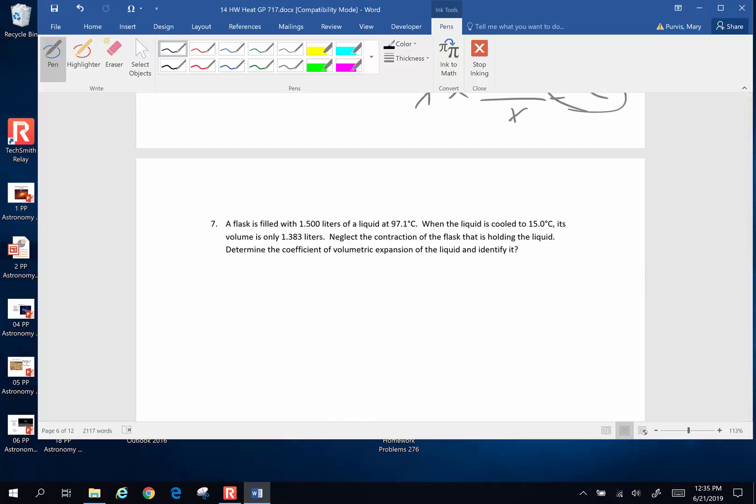Let's do another one of these. A flask is filled with 1.5 liters of a liquid at 97.1 degrees Celsius. When the liquid is cooled to 15 degrees Celsius, its volume is only 1.383 liters. Neglect the contraction of the flask. Determine the coefficient of volumetric expansion for the liquid and identify it. So the change in volume is the original volume beta coefficient of volumetric expansion times change in temperature.